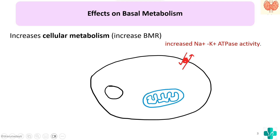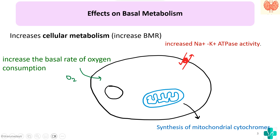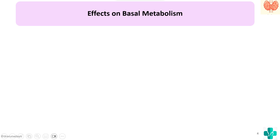It will increase the number of mitochondria and also increase the synthesis of mitochondrial cytochromes so that there can be more generation of ATP, and there will be increased consumption of oxygen. So there will be an increase in the basal rate of oxygen consumption. In a nutshell, it will increase the basal metabolism of the cells.